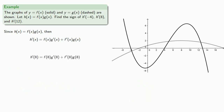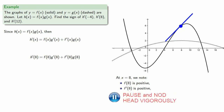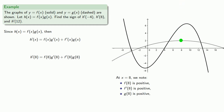How about h prime of 8? That's going to be f of 8 times g prime of 8, plus f prime of 8 times g of 8. Looking at the graph at x equals 8: f of 8 is positive, and the tangent line to f at x equals 8 tells us that f prime of 8 is also positive. g of 8 is positive. And g prime of 8 — the slope of the tangent line to g — is 0, because the tangent line is horizontal.